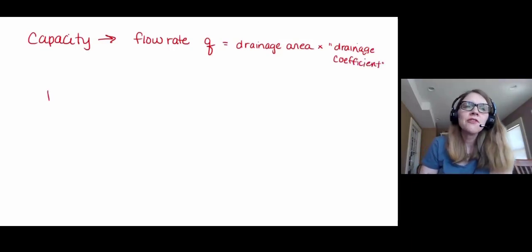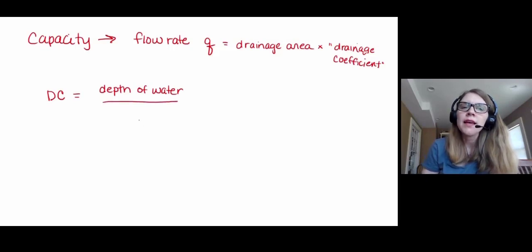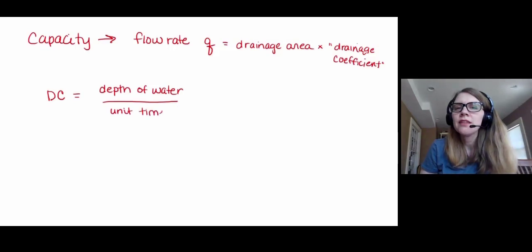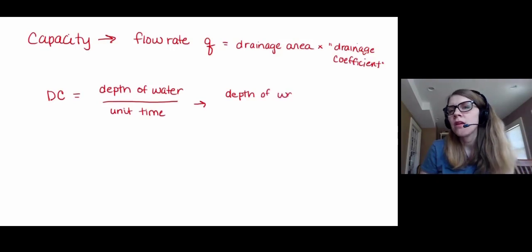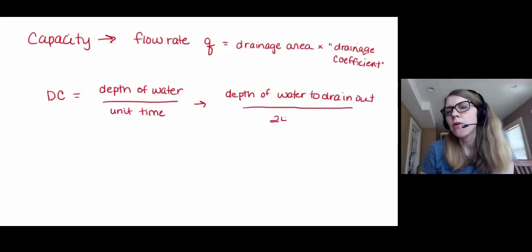And we call that a drainage coefficient. The drainage coefficient, or DC, is a depth of water to be removed from the system. And it's per unit time, but actually we're very specific about what that unit of time is. When we create tabulated drainage coefficients, we consider a 24-hour period.